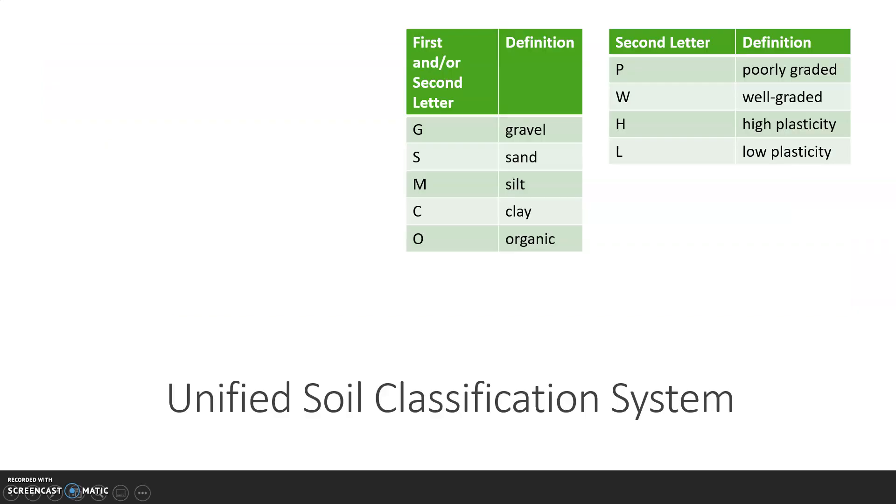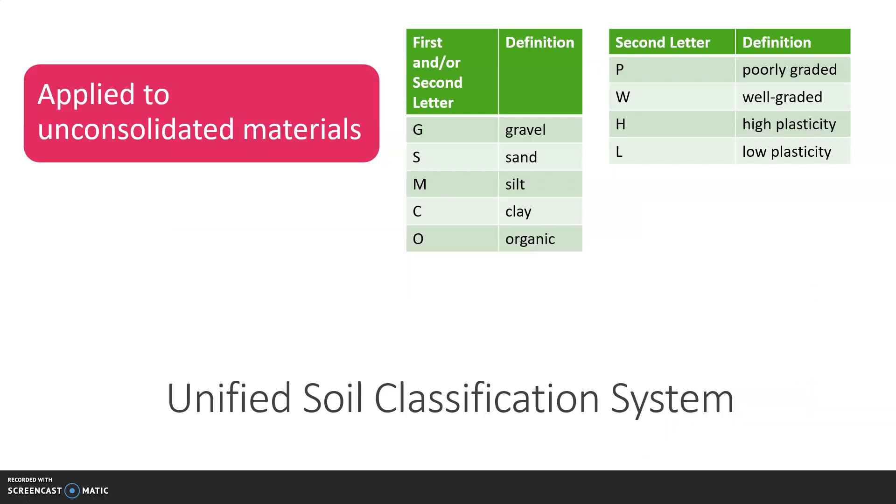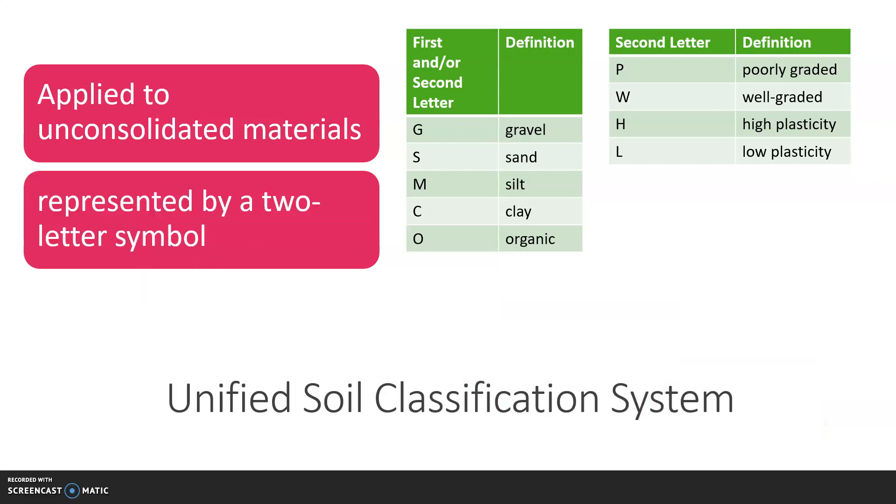The USCS is a unified soil classification system. It applies to unconsolidated materials and is represented by a two-letter symbol. The first letters are G for gravel, S for sand, M for silt, C for clay, and O for organic. The second letters are P for poorly graded, W for well graded, H for high plasticity, and L for low plasticity.